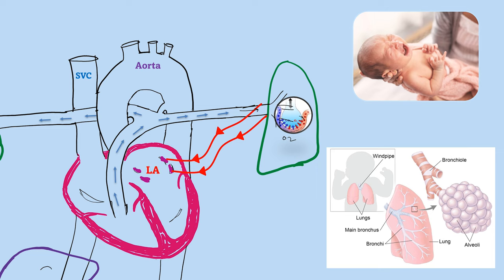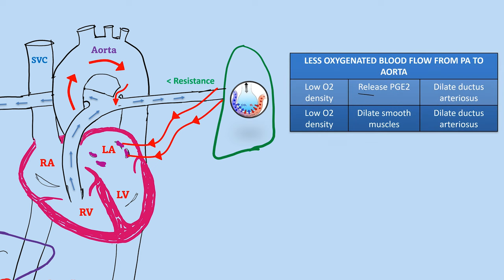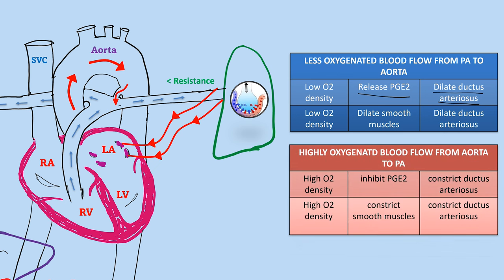The highly oxygenated blood from the lungs enters the pulmonary veins and reaches the left atrium, then the left ventricle, and is pumped into the aorta. Because pulmonary resistance decreases, blood flow through the ductus arteriosus diminishes. The increased oxygenated blood flow also causes the ductus arteriosus to constrict.